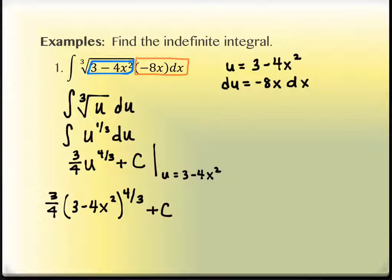There's only one more thing that you would do. The original problem started out with a cube root in it, right? So the answer has that same notation. We're trying to make our answers match the same format that we originally start with. So this will be (3/4)∛(3 - 4x²)⁴ + c.